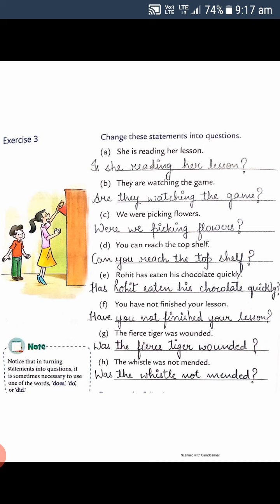In this sentence the verb is in past tense. 'Rohit has eaten his chocolate quickly' becomes 'Has Rohit eaten his chocolate quickly?' 'Have you not finished your lesson' becomes 'Have you not finished your lesson?' 'The first tiger was wounded' becomes 'Was the first tiger wounded?' — put question mark. 'The whistle was not mended' becomes 'Was the whistle not mended?'